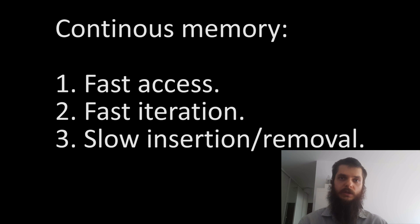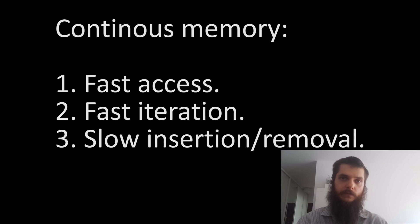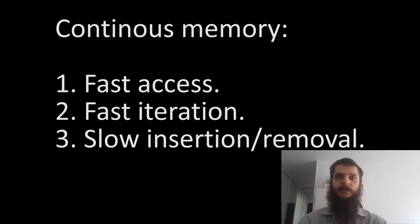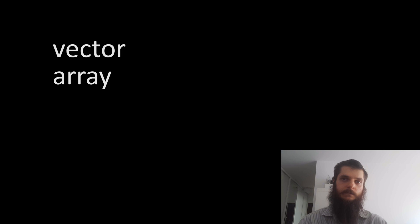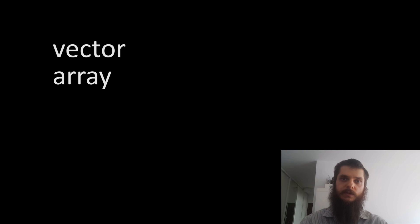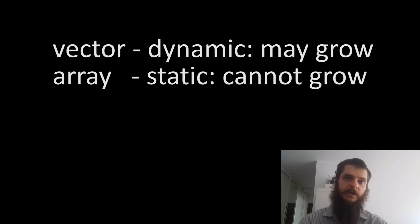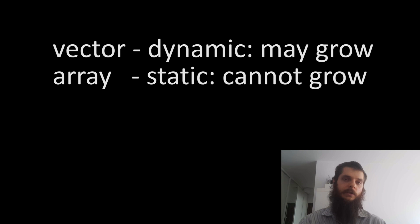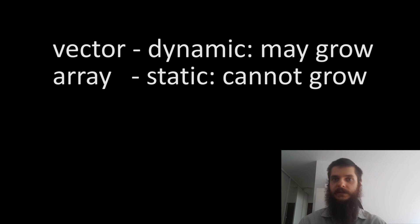If you wish to do a lot of insertions and deletions, continuous memory might not be for you. But if you find that you are iterating over the elements quite a lot, you should really consider a continuous memory container. Such containers are a vector and an array. The difference is that a vector is dynamic — it can grow and shrink — while an array is static. You tell the array up front how many elements to store and that's it.